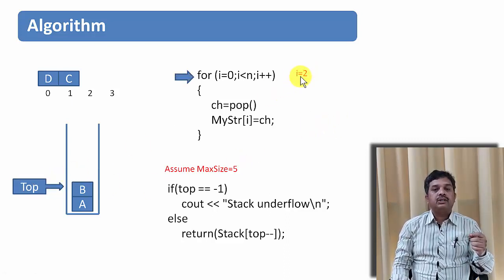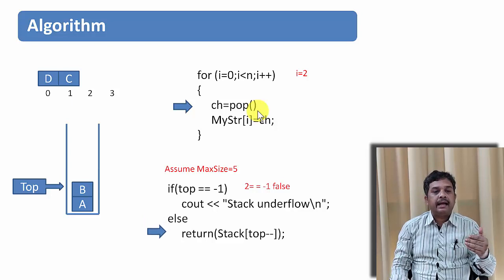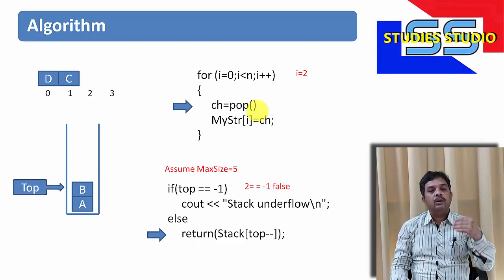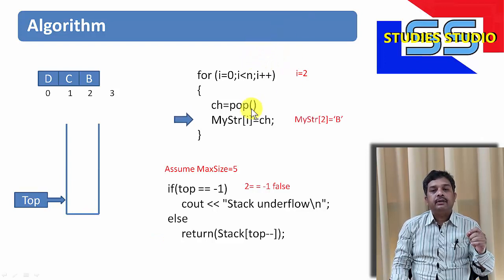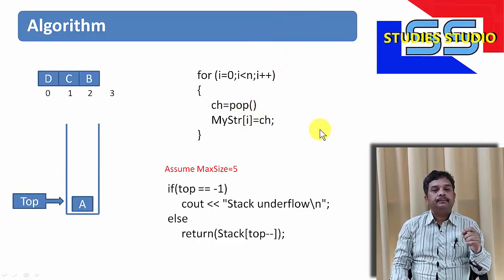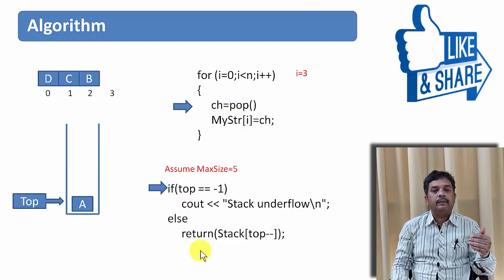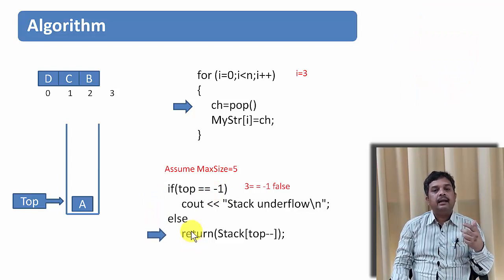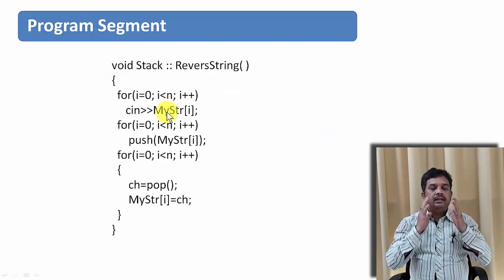Similarly I follow the same process. Now i is 2, I use the pop function again and the top of the stack is B, so B is returned and written at the 2nd location of the string. Then top is pointing to A, and i becomes 3. I use the pop function once more, A is popped out of the stack, and str[3] equals A. So the string is now fully reversed.